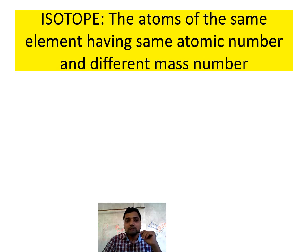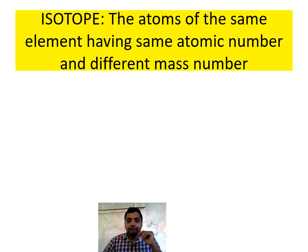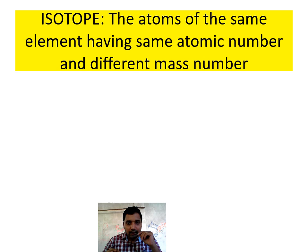Next point of discussion is isotopes. Isotopes are elements having the same atomic number but different mass numbers — meaning the number of protons is the same but the number of neutrons is different. So an isotope is an atom of the same element having the same atomic number but different mass number.